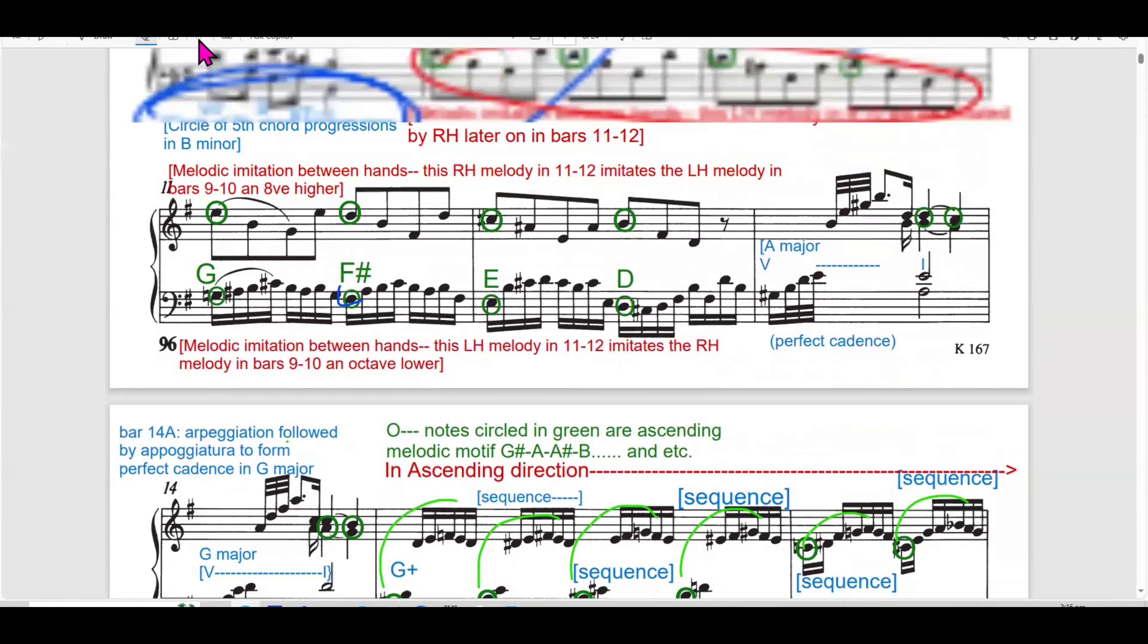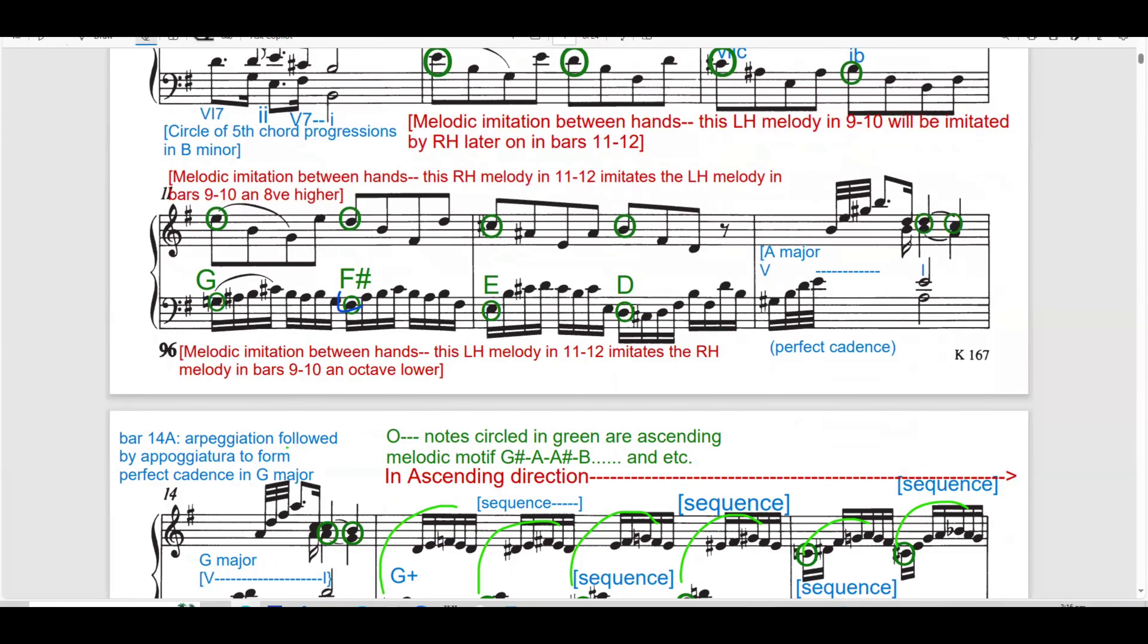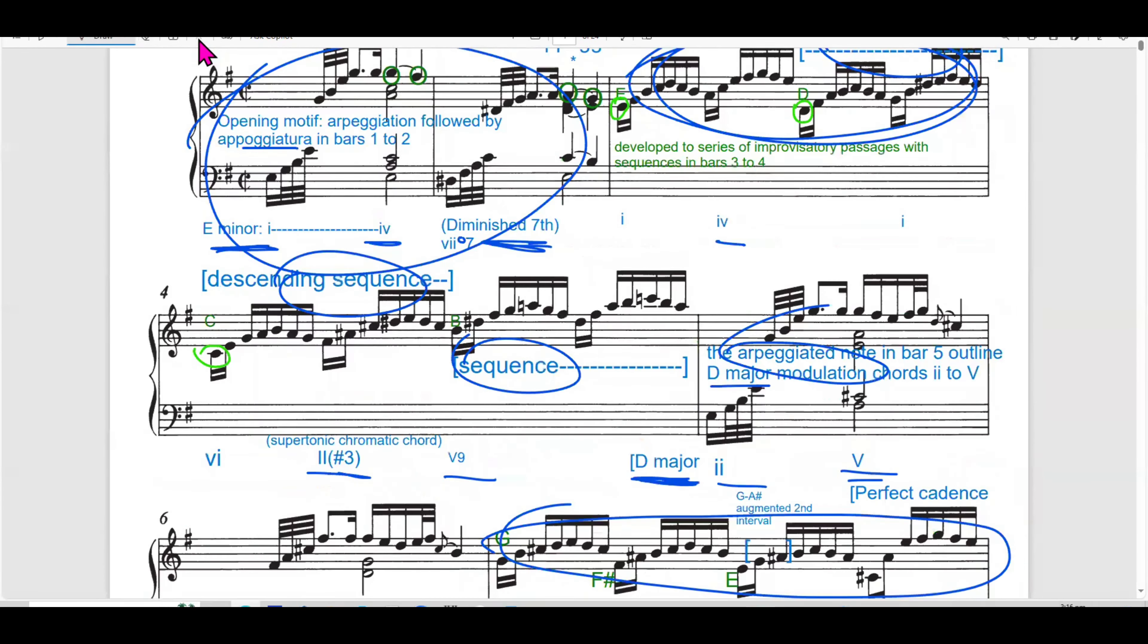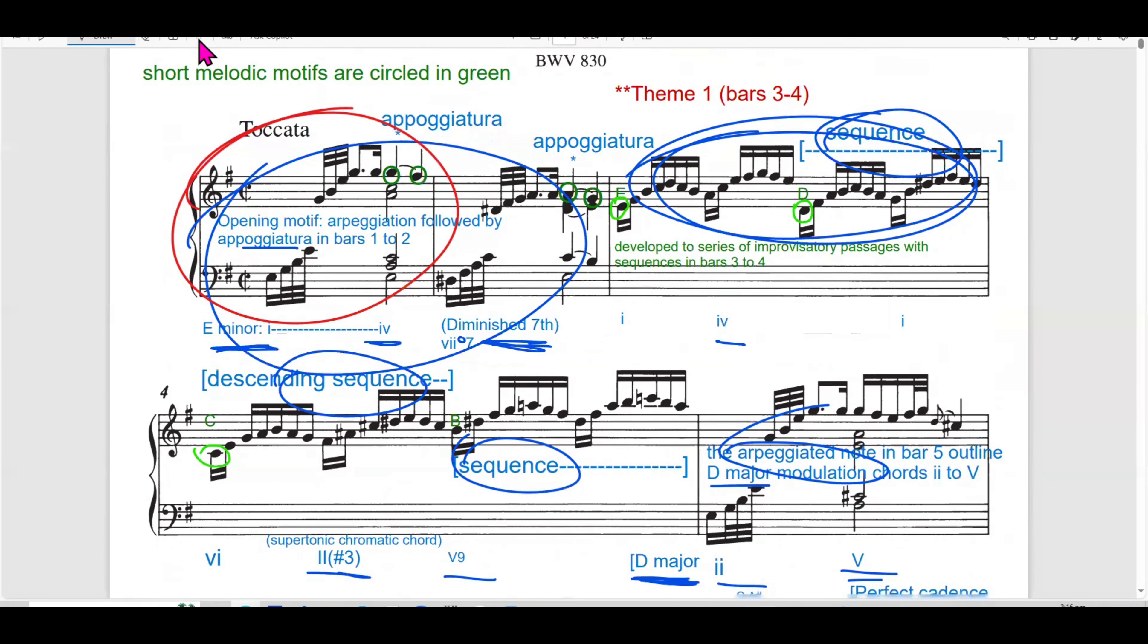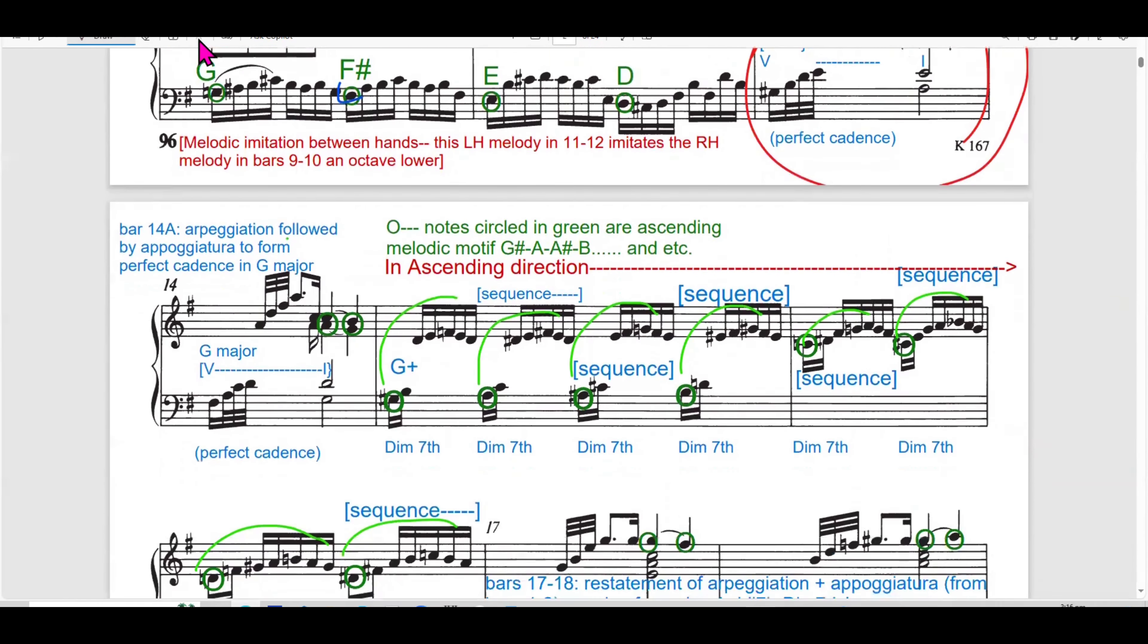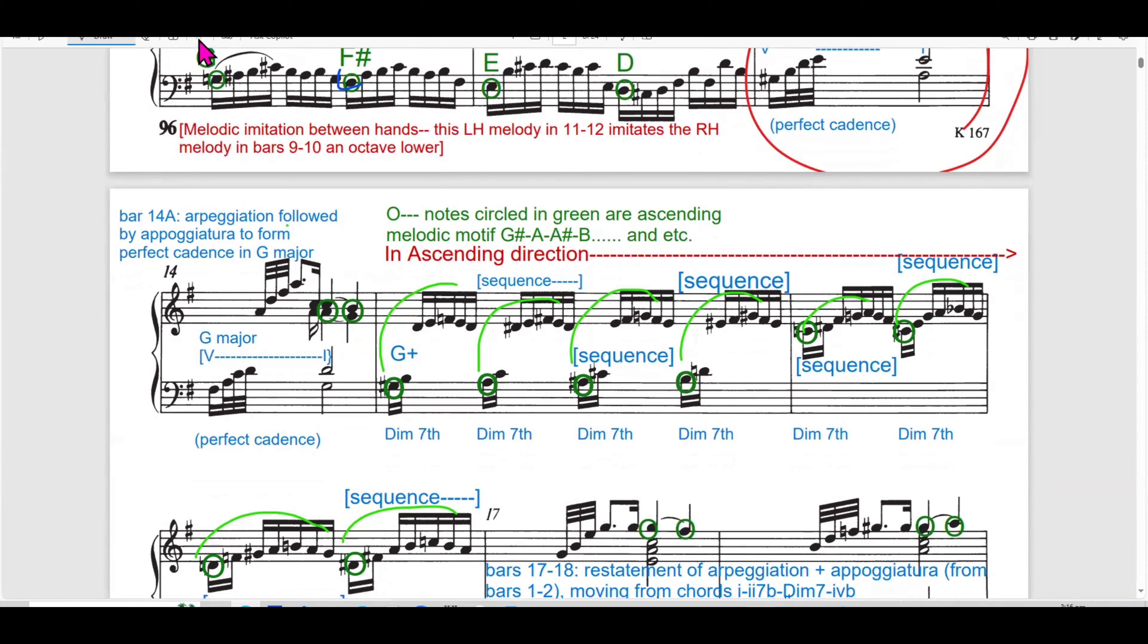The right hand melody for bar 9 to 10 is later on interchanged with the left hand. And the exchange of material highlights Bach's skillful use of inversion and imitation. Features are typical features of fugue-like writing. And in bar 13, bar 13 marked the conclusion of this section with the continuation of melodic imitation from the beginning here. So, it imitates from the beginning.